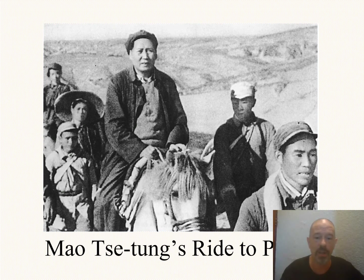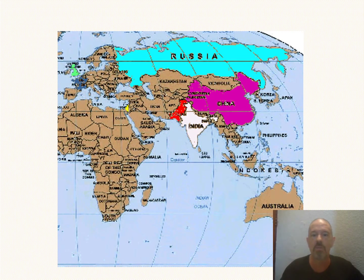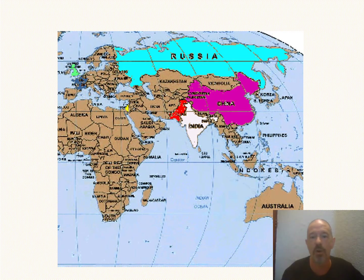Mao Zedong — we'll get to him, his rise to power, the Long March — we've covered that a little bit in the past video lecture. From the U.S. perspective, you have little tiny Western Europe with this giant communist menace looming, perhaps forming forces with China as well. And keep in mind, much of Eastern Europe is also communist.